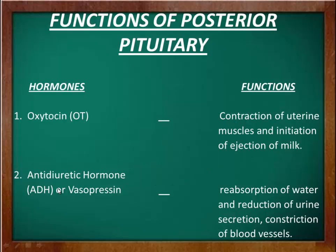The second hormone is antidiuretic hormone, also called vasopressin. It stimulates the reabsorption of water and reduces urine secretion. It also stimulates the constriction of blood vessels and thus increases the blood pressure of the human body.